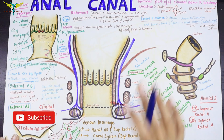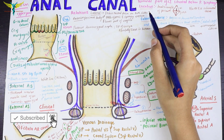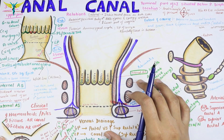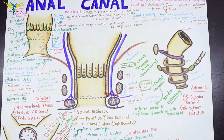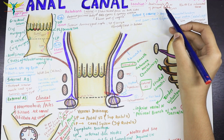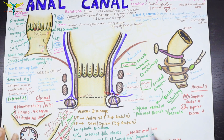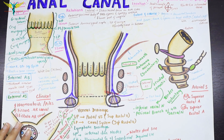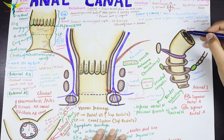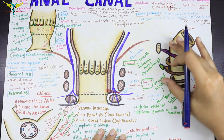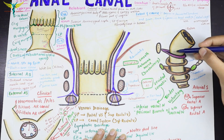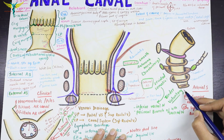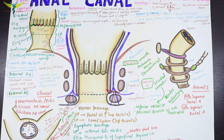The anal canal is the terminal part of the large intestine, situated below the pelvic diaphragm. It is 3.8 centimeters in length and is located in the anal triangle of the perineum, between the right and left ischiorectal fossa. It begins at the anorectal junction, passes downwards and backwards, and opens into the anal orifice in the natal cleft that lies between the two buttocks.